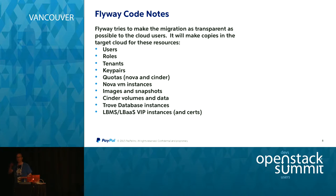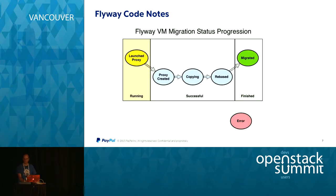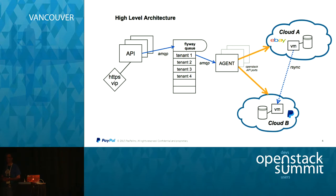Q: About the rsync between the two clouds — what does it need to make it work? Is it shared storage, or does it need IP and SSH between the two? A: In order for the rsync to work, in our case we have a lot of security and firewalls, so we have to open the firewall between the hypervisors in the zones. We open port 22 between our production zones. We also open Keystone, Nova, Cinder, Trove — all of the OpenStack services between the two zones — so the agent can talk to them. There's quite a bit of firewall setup required.